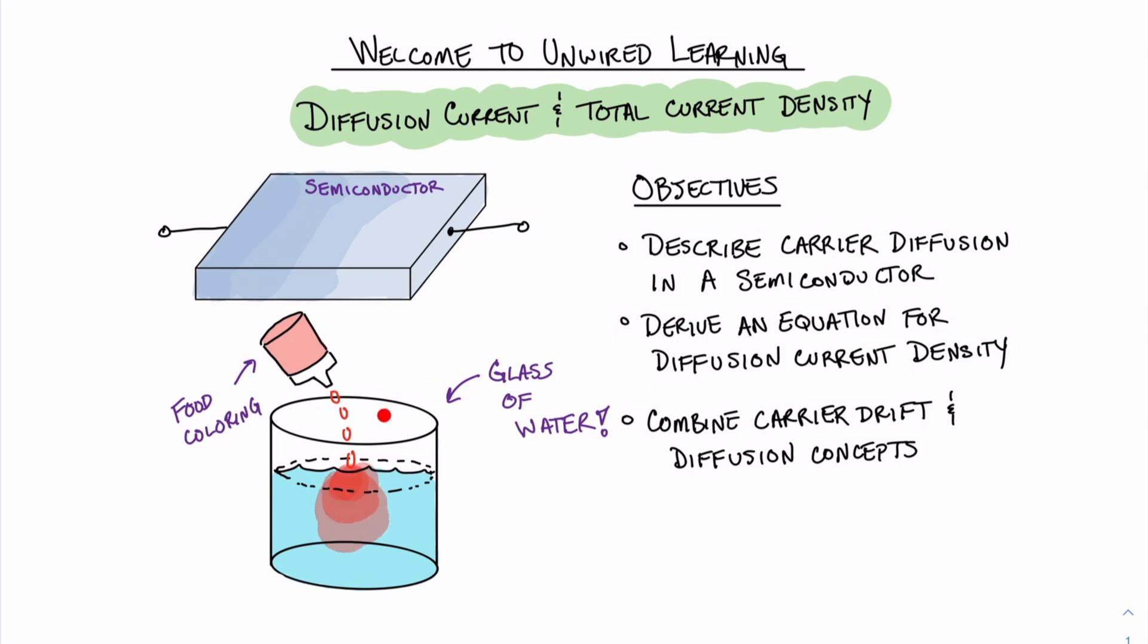This concept of diffusion in the glass of water with food coloring is very similar to that of diffusion in a semiconductor. Up here, I have a picture of a semiconductor block. What I've depicted here is a higher concentration of carriers, the darker blue on the left, and it slowly fades and has less concentration on the right. They want to equalize throughout the material, so we're going to have a net flow of carriers in the direction to the right.